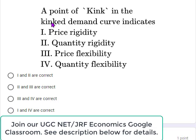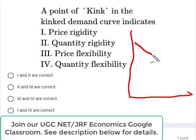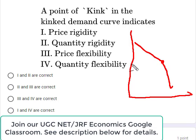This is our first question: a point of kink in the kink demand curve indicates. First, let us see how the kink demand curve looks. Suppose this is a 2-dimensional plot — the kink demand curve can look like this. This is the demand curve, and this point is called the kink because the demand curve changes its slope after this point. Whether you go above or below this point, the slope will change. So at this point, the price and quantity remain rigid — the answer is price rigidity and quantity rigidity.